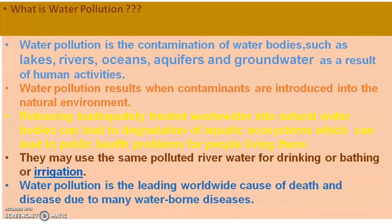Water pollution results when contaminants are introduced into water bodies or natural environments. The release of inadequately treated or untreated wastewater into natural water bodies leads to degradation of aquatic ecosystems and causes public health problems for people living near those natural environments, who use the same polluted river water for drinking, bathing, or irrigation purposes.